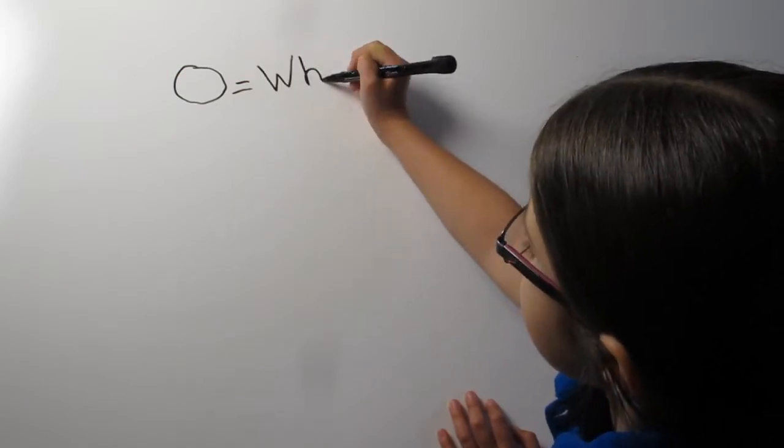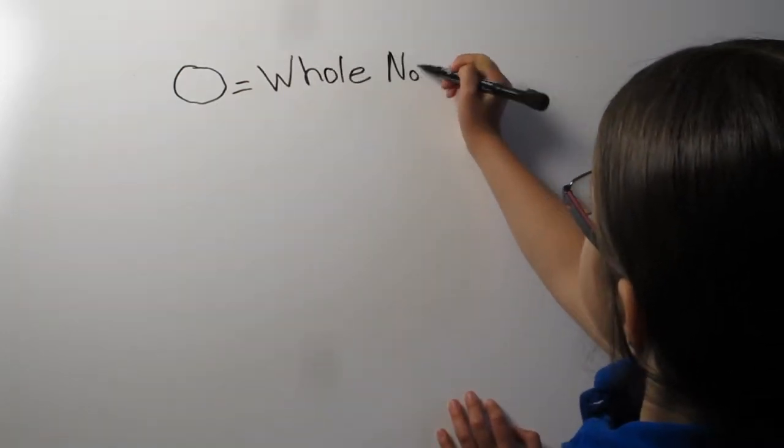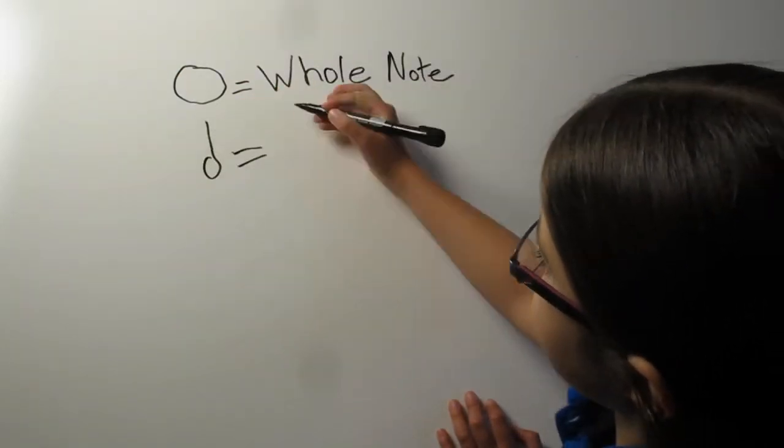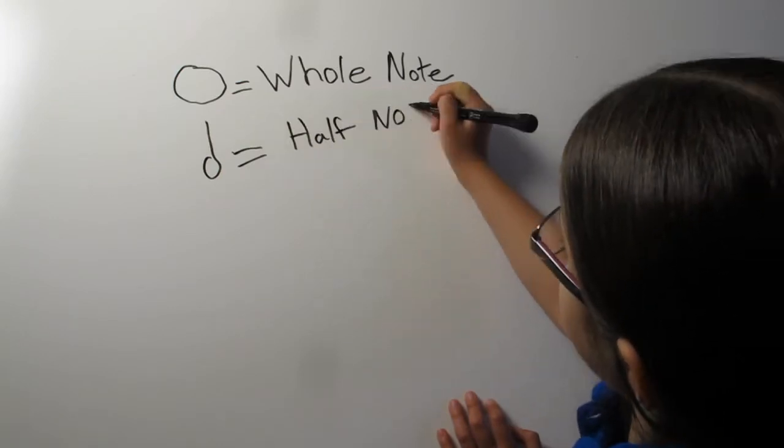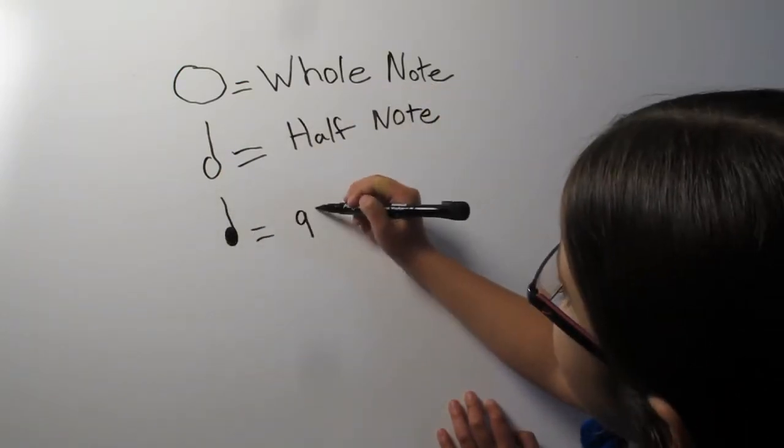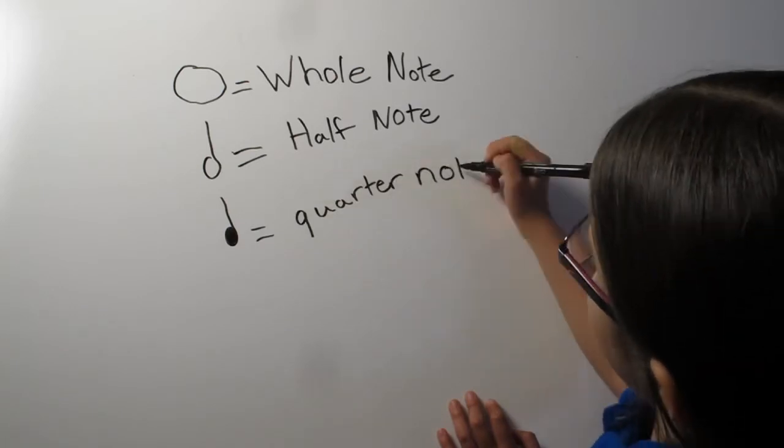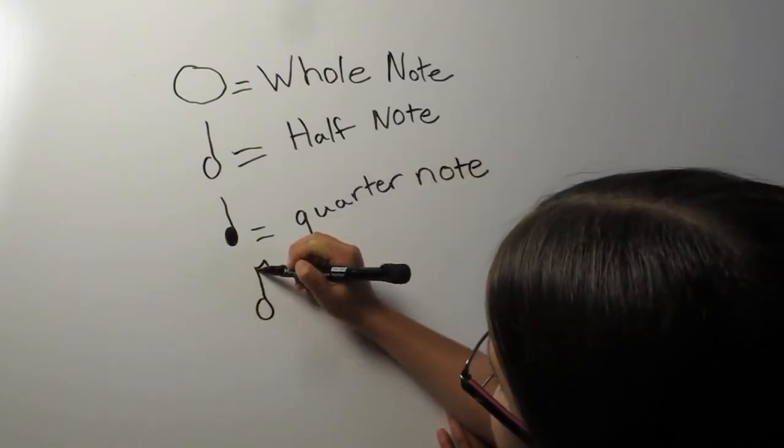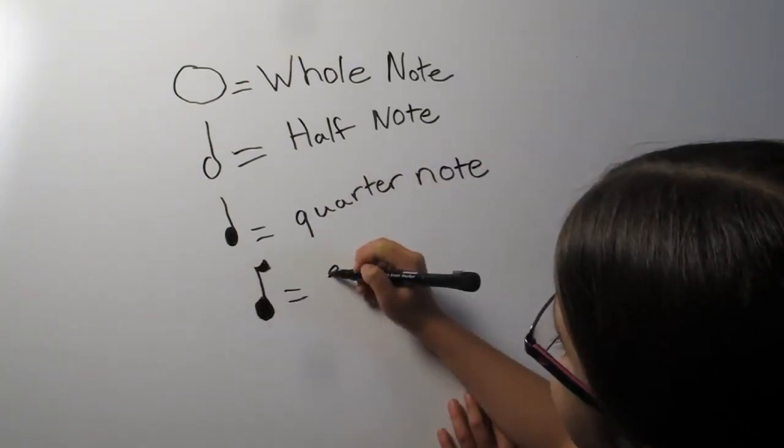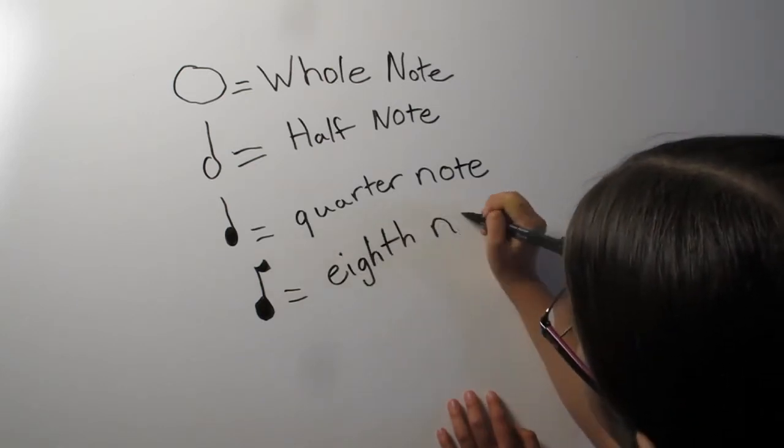That leads me to the second thing I have learned: types of notes. While I learned several years ago about note names, I understood notes for the first time this year. There are many kinds of notes, but the notes that I am going to tell you about in this video are called whole notes, half notes, quarter notes, and eighth notes.